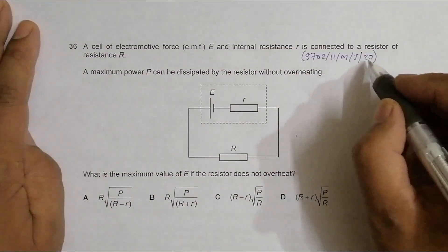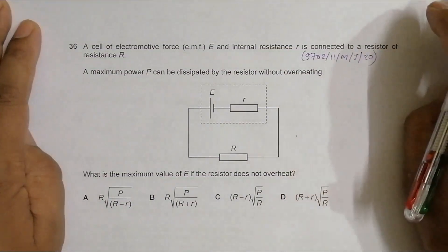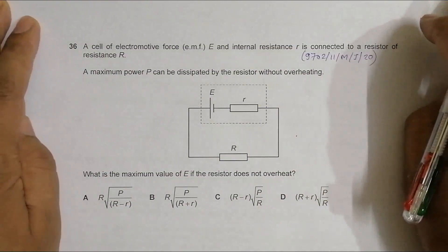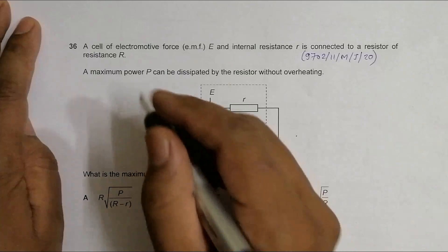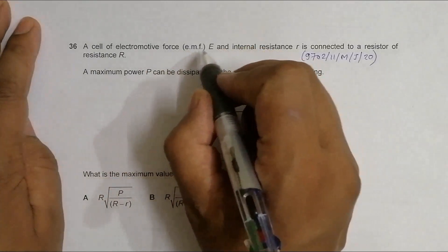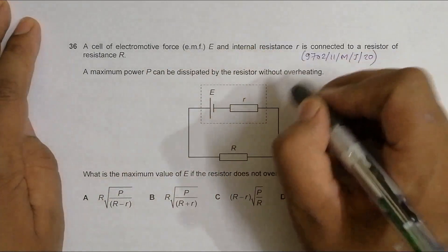Hello folks, this is 2020 major paper 1 and the question number is 36. This question is concerned with the chapter current electricity. It says that a cell of electromotive force (EMF) E and internal resistance r (small R) is connected to a resistor of resistance R (large R).